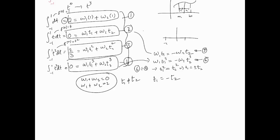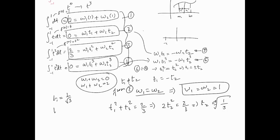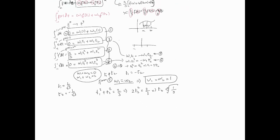With t1 = -t2, substituting into equation three gives w1·t1² + w2·t2² = 2/3. Since t1 = -t2, this becomes 2·t2²·(w1+w2)/2... Working it through: two·t2² = 2/3, so t2² = 1/3, giving t2 = 1/√3 (and t1 = -1/√3). Using equation one, w1 + w2 = 2, and symmetry gives w1 = w2 = 1.